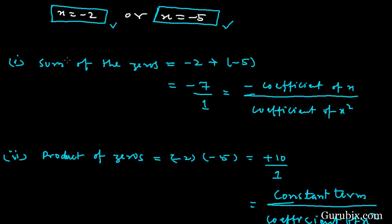Now we shall verify the relationship between the zeros and the coefficients. First, we find the sum of the zeros: (−2) + (−5) = −7. We can write this as −7/1, which equals −(coefficient of x) / (coefficient of x²). So the sum of zeros equals −(coefficient of x) / (coefficient of x²).